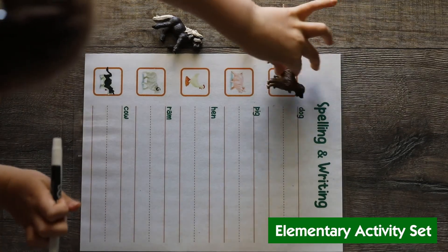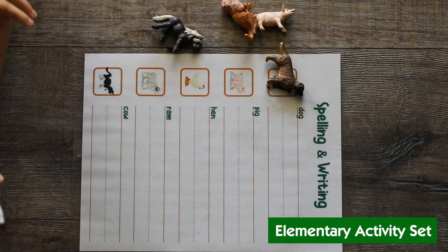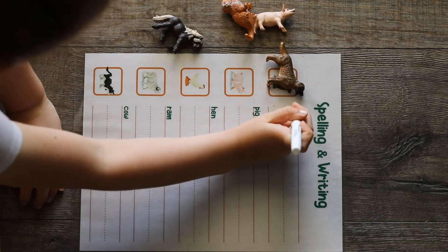Activity 1's main goal is practicing spelling and writing, but it also includes tactile learning and a matching activity.